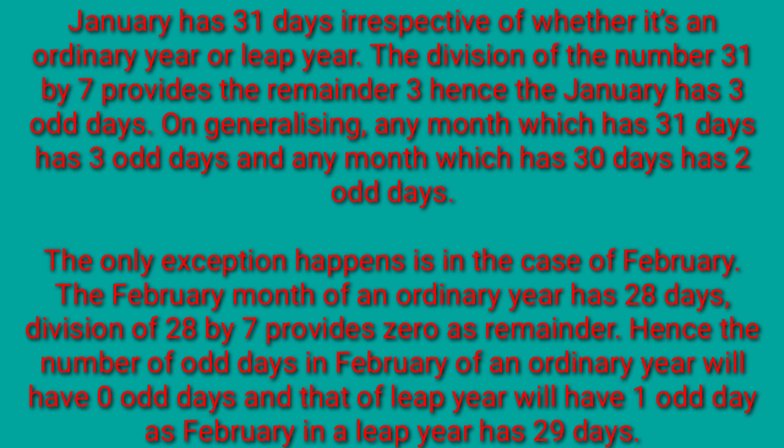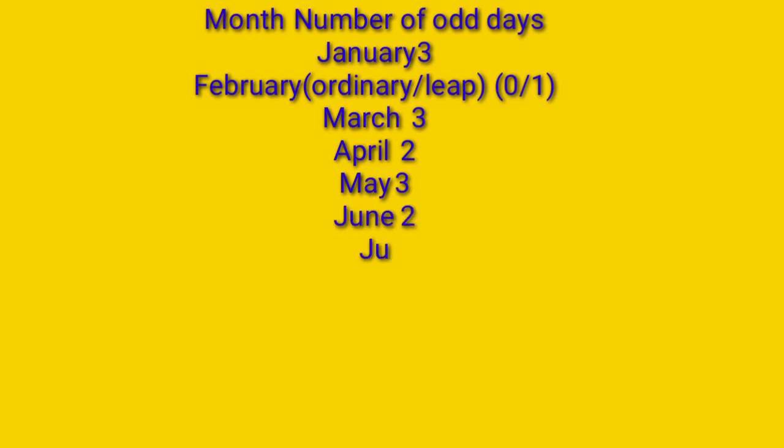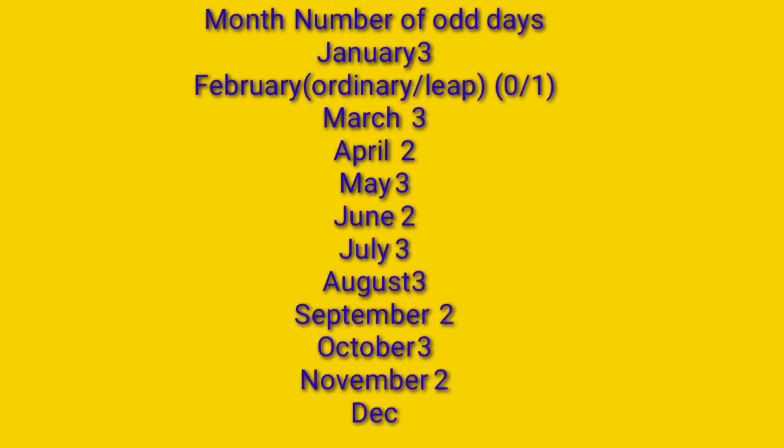Now moving to the next slide — the month-wise number of odd days: January has 3 odd days, February has 0 odd days (1 in a leap year), March has 3 odd days (31 days), April has 2 odd days (30 days), May has 3 odd days, June has 2 odd days, July and August have 3 odd days each.